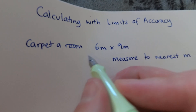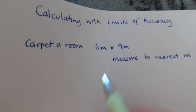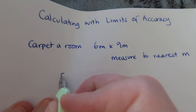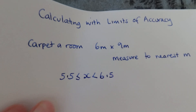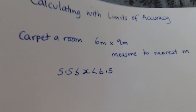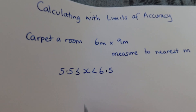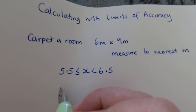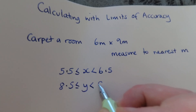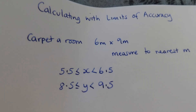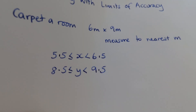Let's work out the error intervals of these two measurements. The six meters has been measured to the nearest meter, so it could have been anything from 5.5 to 6.5 meters. The depth of the room, again measured to the nearest meter — I'll call this y — could have been anything from 8.5 to 9.5 meters. That's the error interval for these measurements.